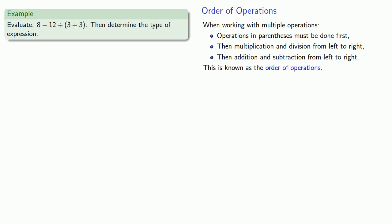What if we throw down some parentheses? So we deal with the addition 3 plus 3 first. We have subtraction and division, so we do the division, 12 divided by 6 first. And now we're left with a subtraction, 8 minus 2 giving us 6. And since the last operation performed was a subtraction, the expression is a difference.